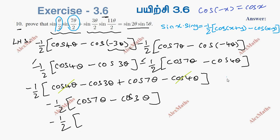Now, using the reverse formula of cos x minus cos y, which equals minus 2 sine x plus y by 2 sine x minus y by 2.